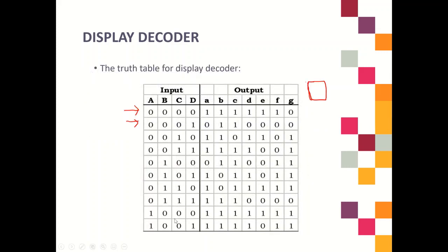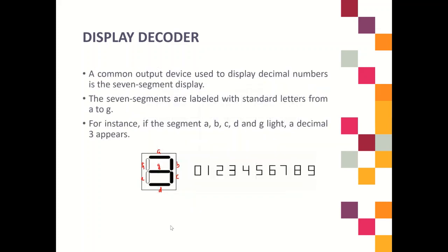You can refer to the other inputs, for example 9 or 5. For decimal 5, the segments needed are A, C, D, F, and G — it will shape as a 5.